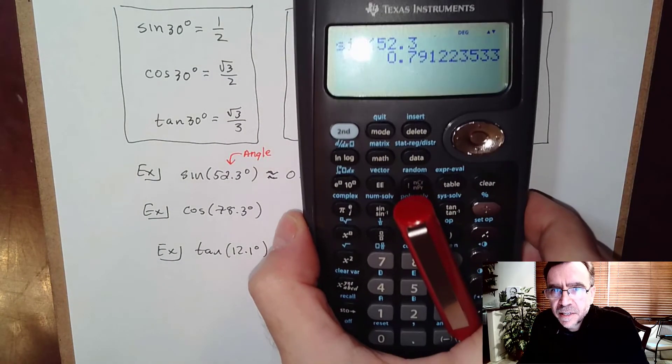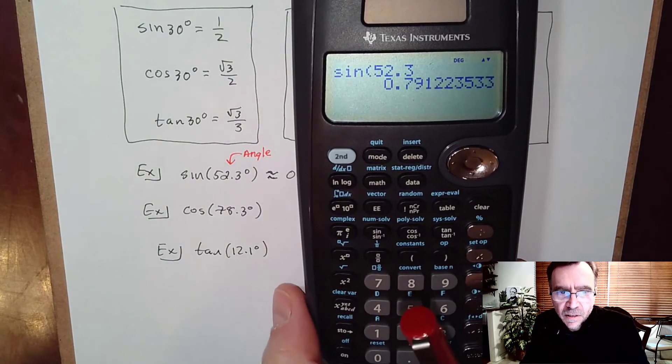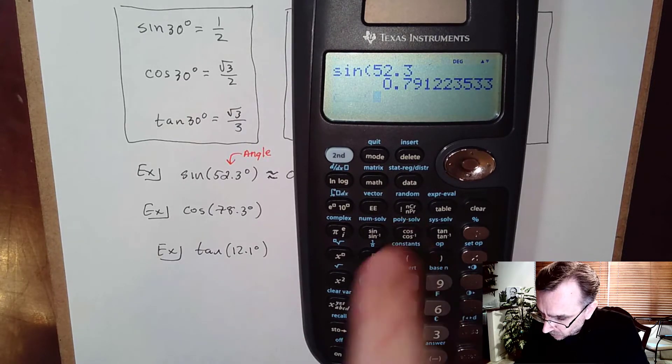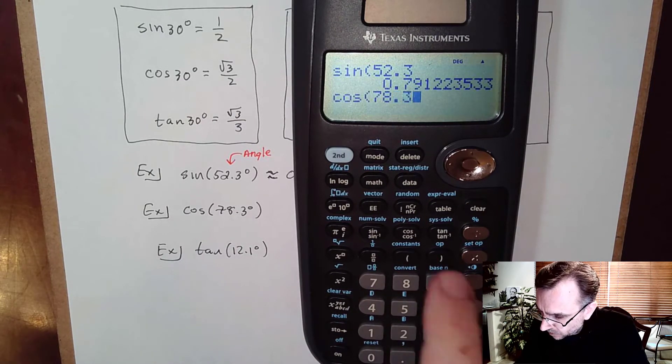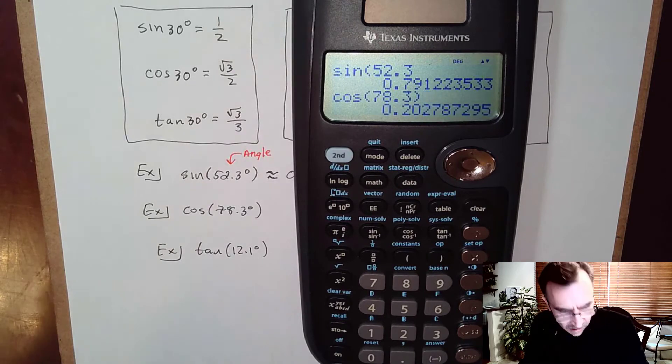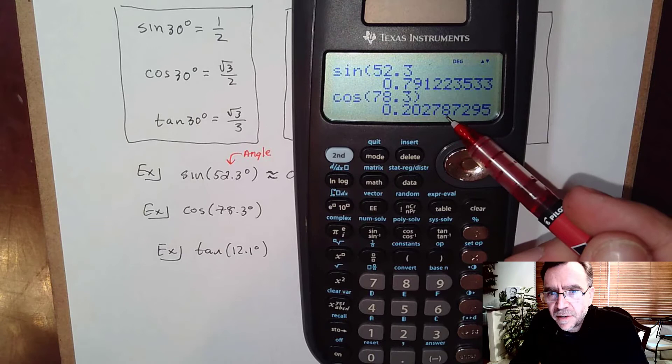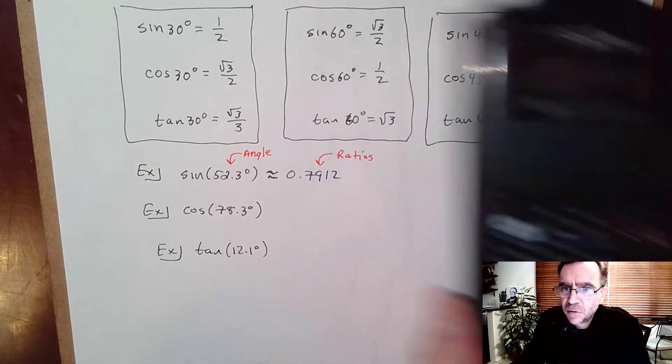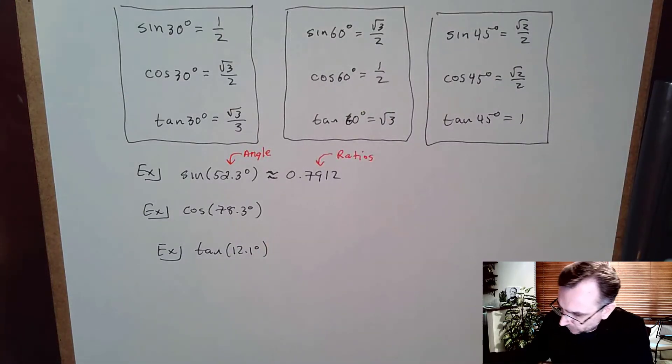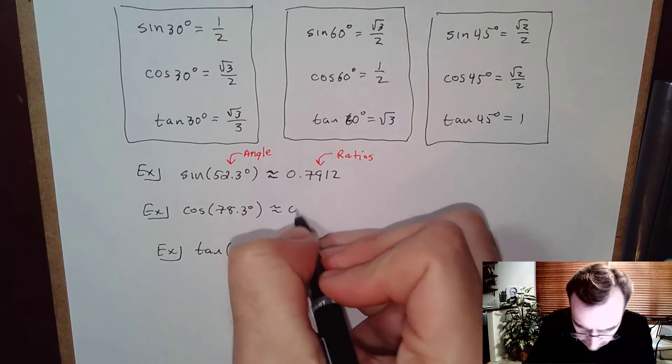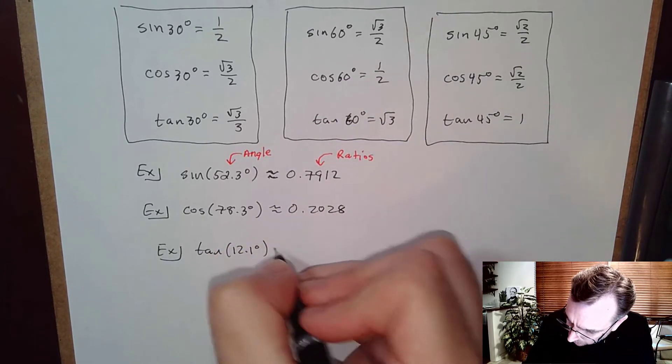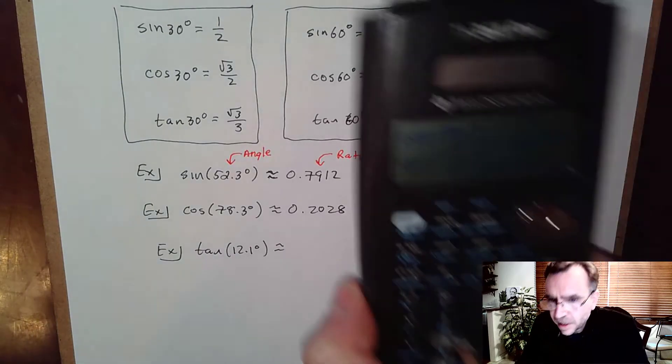Next, let's do cosine. Cosine of 78.3° - I'm getting 0.2027, the next digit is an 8, so I'm going to round up: approximately 0.2028.